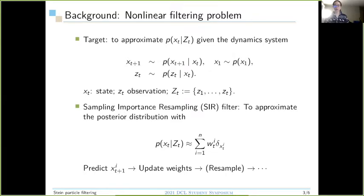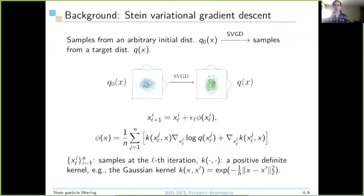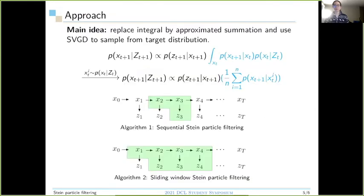SIR is a fundamental particle filter method to solve nonlinear filtering. It approximates the posterior with particles. It firstly predicts particles, then updates their weights. It may resample after several iterations, then loops forward. The tool we use to solve the problem is Stein variational gradient descent. It gradually transforms samples from an arbitrary initial distribution q0 to samples of our target distribution q. In iteration, xl+1 equals xl plus epsilon phi(xl). Phi(x) is like the direction of transforming and epsilon_l is the step size. Notice that in this method, we only need gradient of log q, so the normalization constant in the denominator of q is not important at all. This property makes it ideal to deal with our target distribution obtained by Bayesian rule.